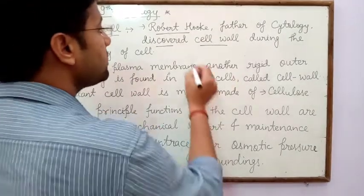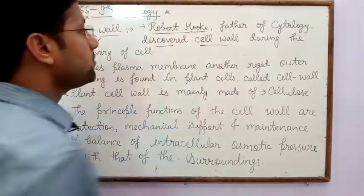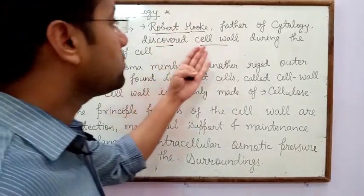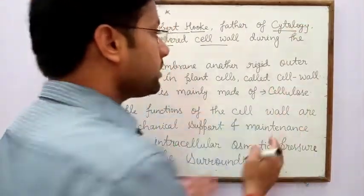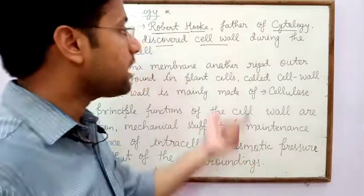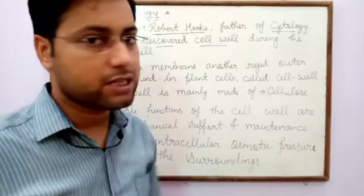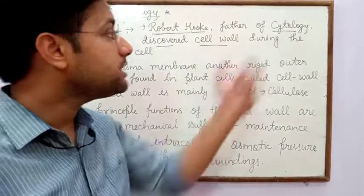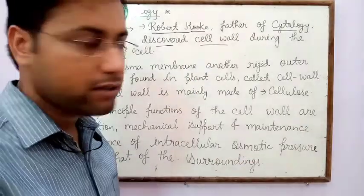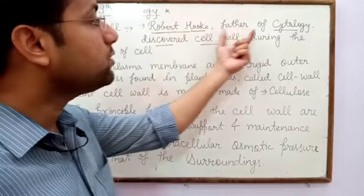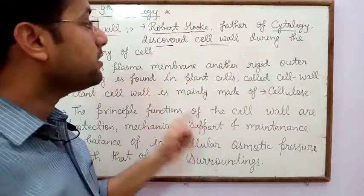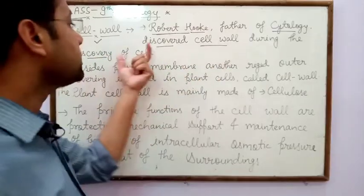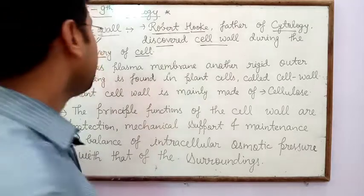Cell wall was discovered by Robert Hooke. Robert Hooke is known as the discoverer of cell and is known as the father of cytology. Cytology is a branch of science which deals with the study of the structure and function of the cell. During the discovery of cell, Robert Hooke also discovered cell wall.